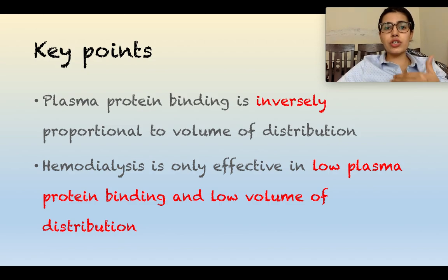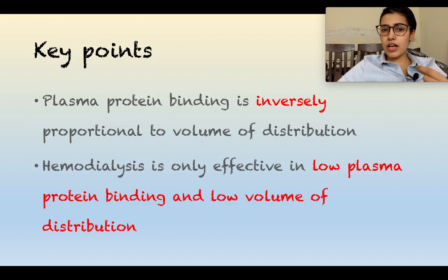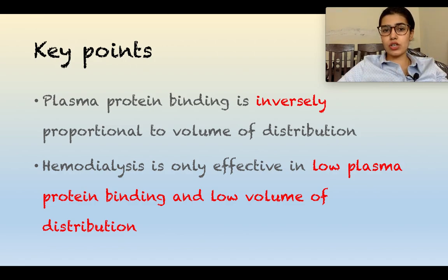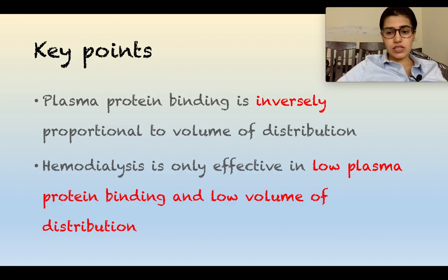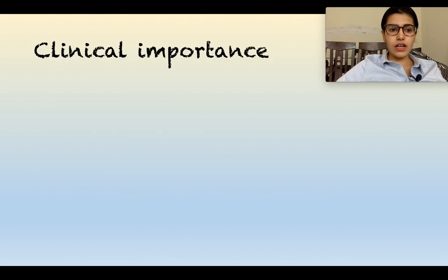The second key point involves hemodialysis, used in cases of poisoning. To remove a drug by hemodialysis, two prerequisite conditions must be met: the drug should have low plasma protein binding, and it should have a low volume of distribution. If the drug has gone into the tissues, it cannot be removed by dialysis.